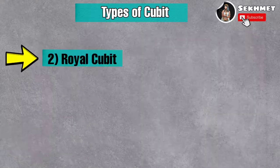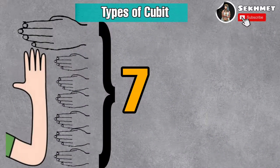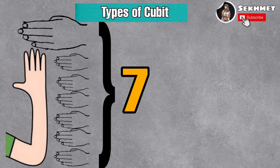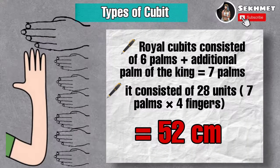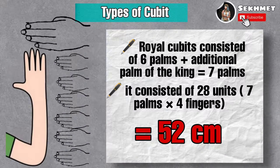The second type is the royal cubit, which consisted of seven palms — six palms plus an additional palm of the king. Each palm consisted of four fingers, which means the royal cubit consisted of 28 units, approximately equal to 52 centimeters.